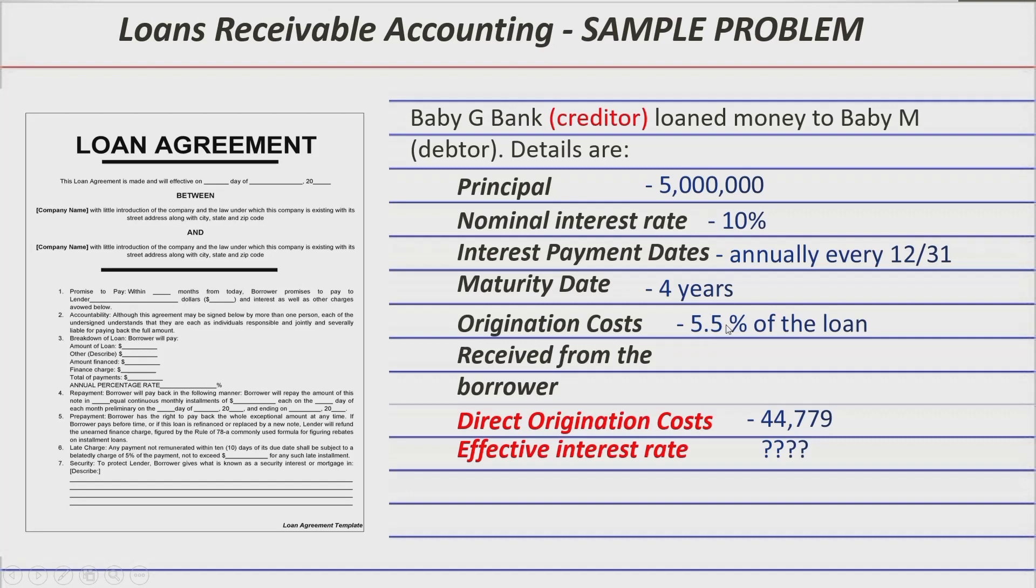That 5.5% is 275,000 if converted into amounts. The direct origination cost is 44,779. And now we have the effective rate, which is still unknown, but we are sure that it is very different from this nominal rate because the loan receivable account is not already equal to the principal amount because of these two origination costs present.